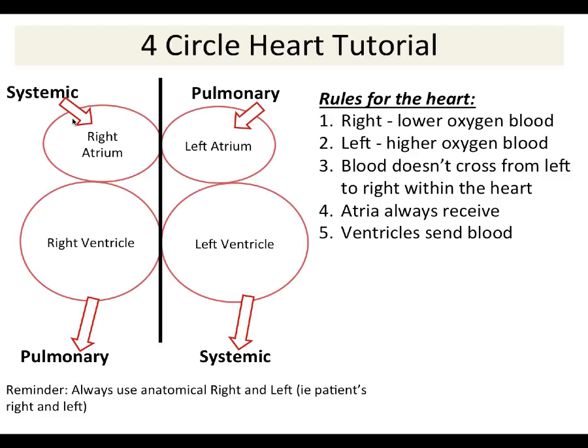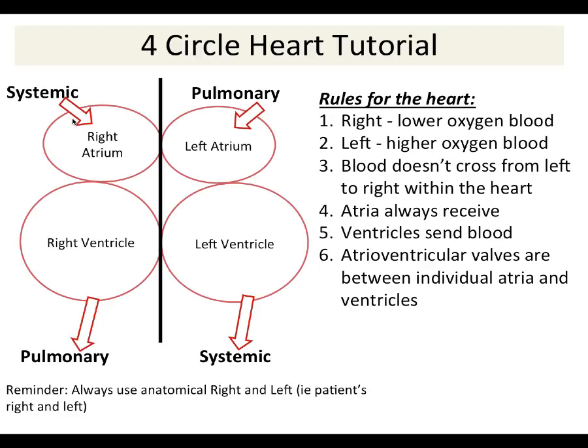We also need to talk about the control of flow, so I'm including the valves here. We have two different kinds of valves. First, our AV valves, or atrioventricular valves — the word literally says atrium-ventricle — so these AV valves sit between the atria and the ventricles. We have the right AV valve, the tricuspid, and the left AV valve, the bicuspid.